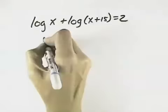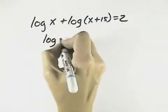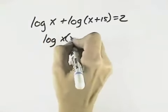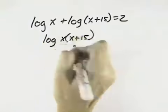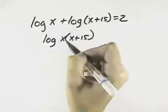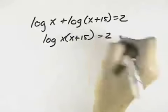Since it's a sum of logarithms, that means I can rewrite it as a single logarithm of the product of x times x plus 15 to combine it together, because the sum can be combined using the product rule. That will equal 2.